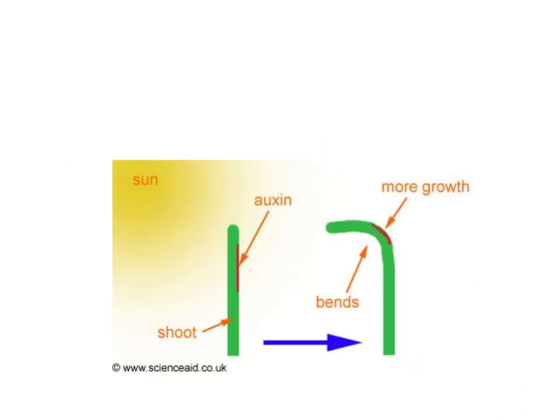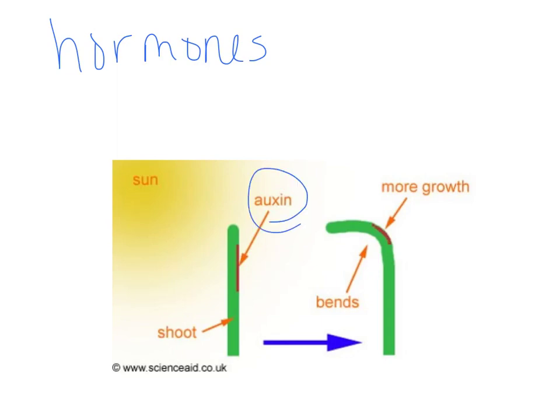Plants are able to respond to these stimuli using hormones. Plants don't have a nervous system, but they do have an extensive network of hormones to allow the cells to communicate with one another and for the plant to have some sort of response. One example is auxin. Auxin allows for cell growth and cell elongation. When there's a stimulus — in this case the sun — the auxin encourages cell growth on one side but not the other, so the plant ends up bending and growing towards the sun.